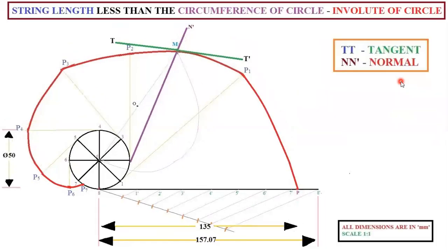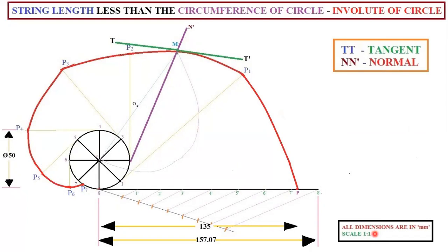Draw this diagram on your A3 sheet. The heading is: 'Length of the string less than the circumference of the circle — Involute of a circle.' Height of heading text is 10 mm. T–T-dash is the tangent, N–N-dash is the normal. Subheadings should be 7 mm. All dimensions are in mm. Scale 1:1 should be at the bottom right corner, with text height 5 mm. Draw exactly as shown to easily score 20 marks.